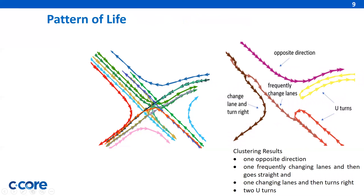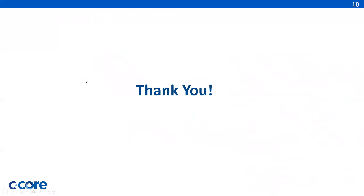Based on these clustered normal patterns of life, five testing trajectories were simulated to examine the clustering results with the following abnormal patterns shown in the figure on the right. Such patterns include driving in the opposite direction, frequently changing lanes, and others. The simulated trajectories were tested with the DBSCAN method, and all trajectories were correctly identified.